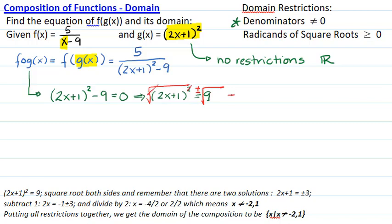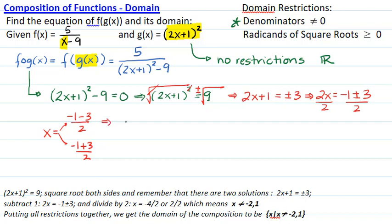So I get 2x+1 = ±3. Subtract 1: 2x = -1±3. And divide by 2 to get two possible answers: (-1-3)/2 or (-1+3)/2. That means x = -2 is one of the zeros of the denominator and x = 1 is one of the other zeros. But because these are zeros of the denominator, I have to make sure that x ≠ -2 and x ≠ 1.